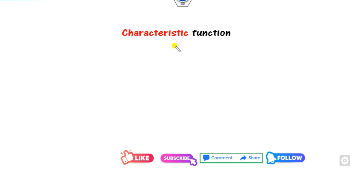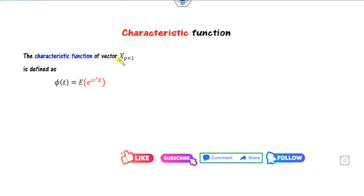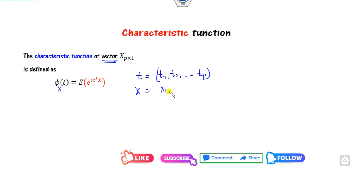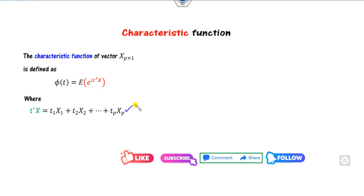Before that, recall how we define the characteristic function. It is denoted by capital Phi, and small t is the generating parameter. If you have the vector X, then the characteristic function Phi of X is defined as the expected value of E raised to the power iota t-complement X. We take the complement because it is a vector value. So small t is the vector T1, T2, ..., Tp, and X is the column vector X1, X2, ..., Xp. If you multiply them, you get T1·X1 + T2·X2 and so on.